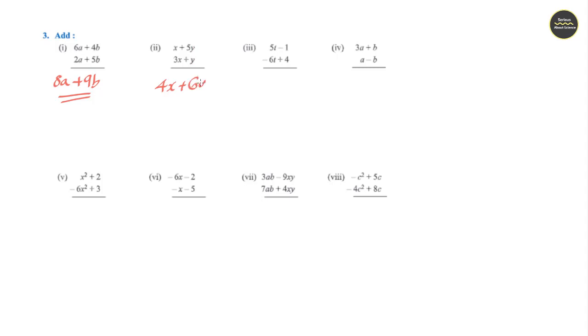Question 3: 5t minus 6t gives minus t, then minus 1 plus 4 gives plus 3. Answer would be minus t plus 3.